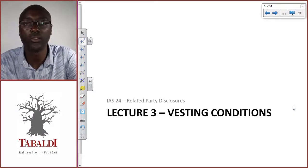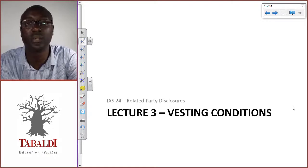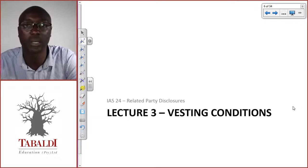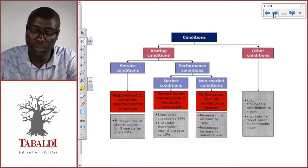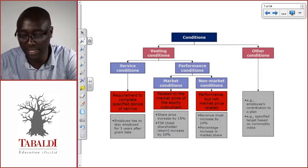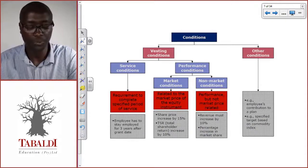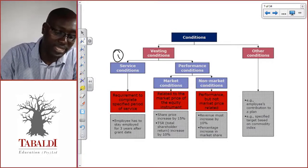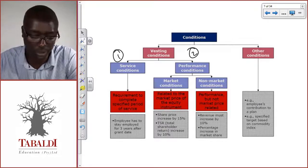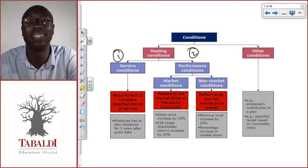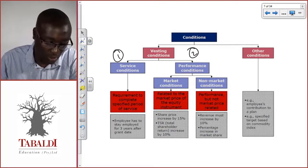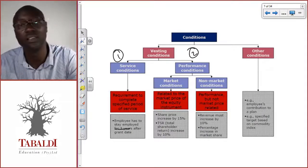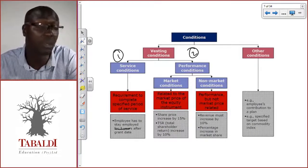Now that we've gone through the timeline of share-based payments, let's look at the vesting conditions. These are the conditions upon which, if satisfied by the counterparty, make the share-based payments vest — they become unconditional for the counterparty because they've met the conditions agreed upon at the grant date. There are two types of vesting conditions: number one, service conditions, and number two, performance conditions. Service conditions require completing a specified period of service — for example, if you work for me for three years, the employee must stay employed for those three years after the grant date for the options to vest.